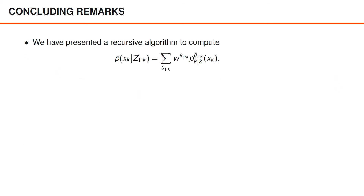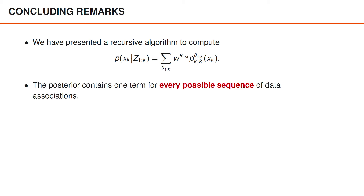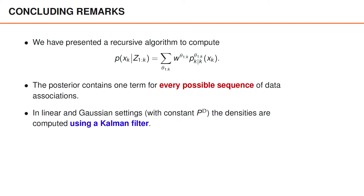We are now ready to wrap up. We have learned about tricks to normalize mixtures of densities and a few other things. Our main goal was to present a conceptual solution to recursively compute the posterior at time k. We have seen that the posterior can be decomposed into a summation that contains one term for every possible data association sequence. An important advantage is that we can use a simple Kalman filter to compute the densities and weights if the models are linear and Gaussian.